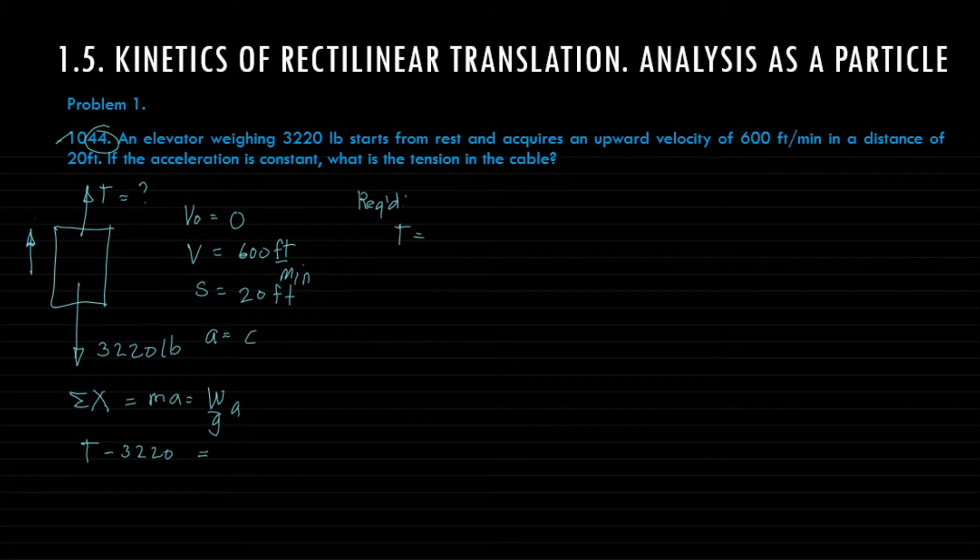So T minus 3220 equals W over g times a. We have the value of g, of course since we have an English unit, we will be using g as 32.2 feet per second squared. And a we don't have.